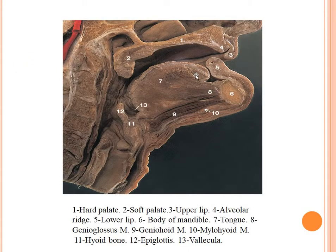In this diagram we can see the hard palate, the soft palate, the alveolar region, the upper lip, lower lip, body of the mandible, tongue, genioglossus, geniohyoid, mylohyoid, hyoid bone, and the epiglottis.